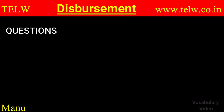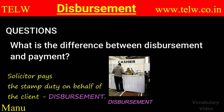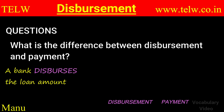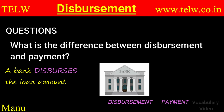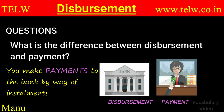Now let's look at some relevant questions. What's the difference between disbursement and payment? We'll give you an example here. When a solicitor pays a stamp duty on behalf of the client, it's a disbursement. When he takes a refund from the client, the client makes the payment. Similarly, a bank disburses the loan amount, but you make the payment to the bank by way of installments. That's the repayment of the loan.